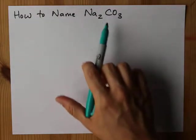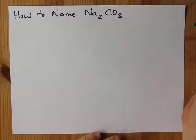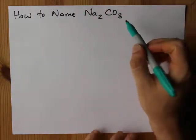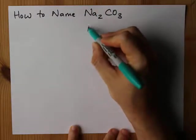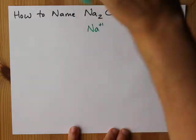Very quickly, how to name Na2CO3. This ionic compound comes from the ions of Na with a plus one charge.